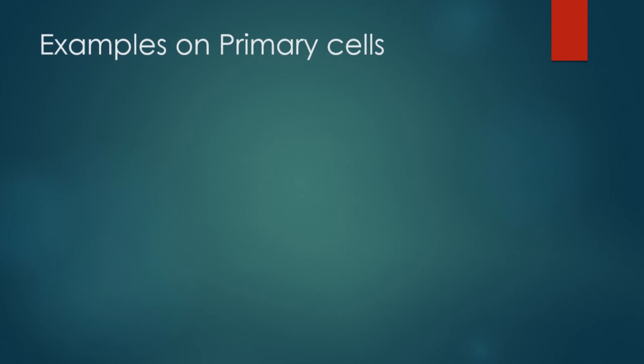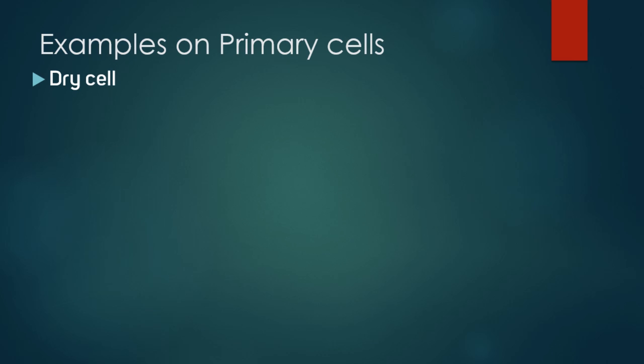So here is an example of a primary cell, which is the dry cell. A dry cell battery is a voltage producing battery containing the electrolyte chemical in the form of a thick paste. It produces voltages of about 1.5 volts.